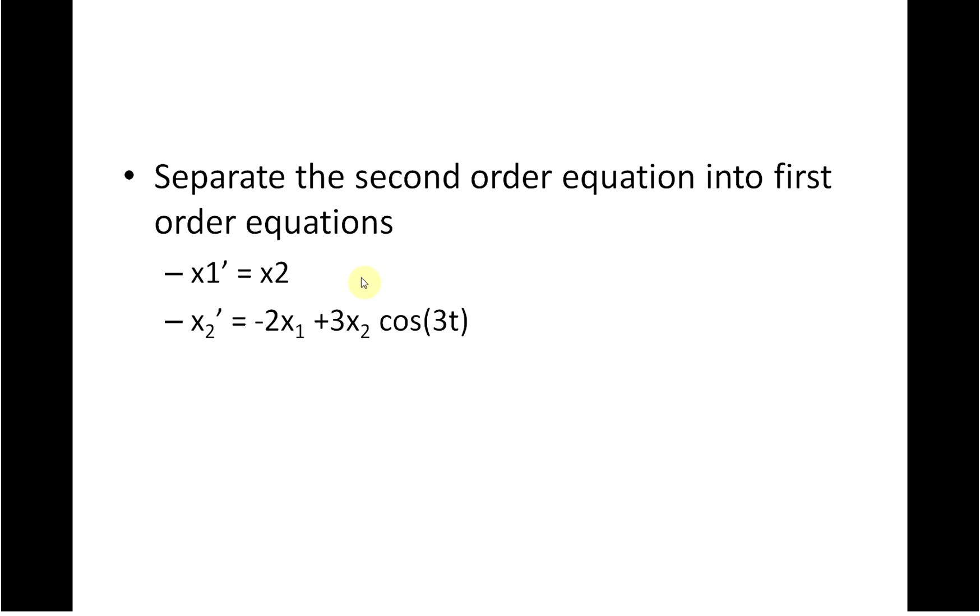So we've created two first order from one second order, and I've written it in matrix format. So in other words, this row by this column is 0. So 0x1 plus 1x2 gives me that.